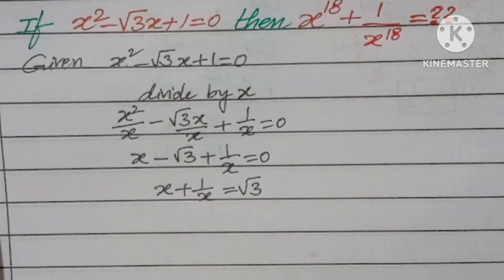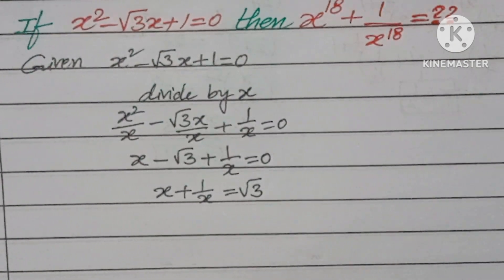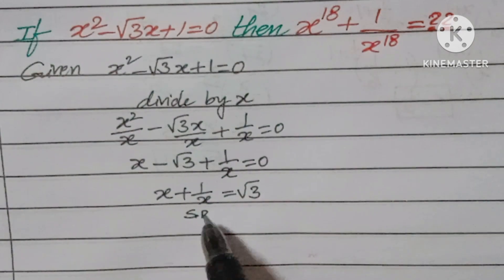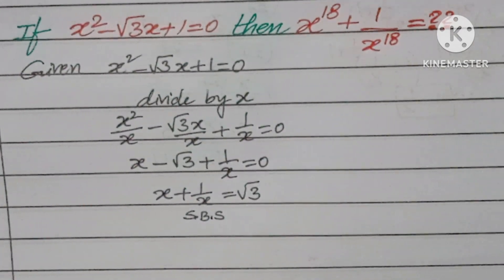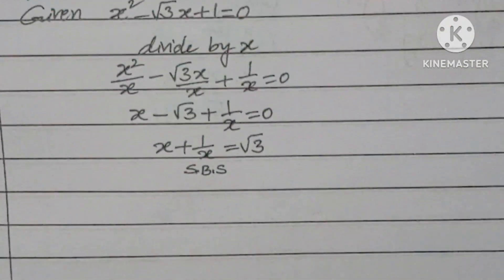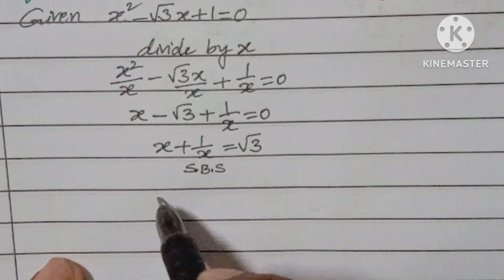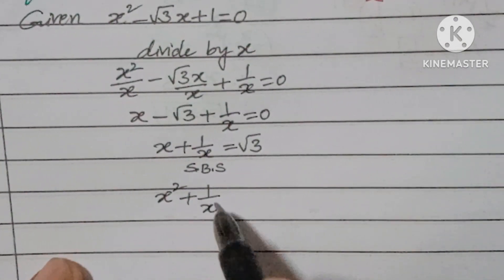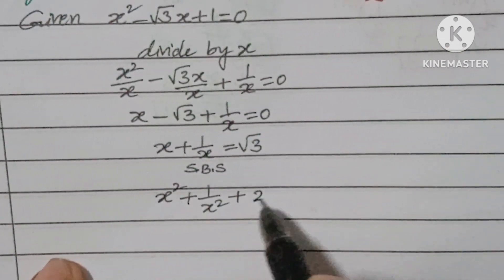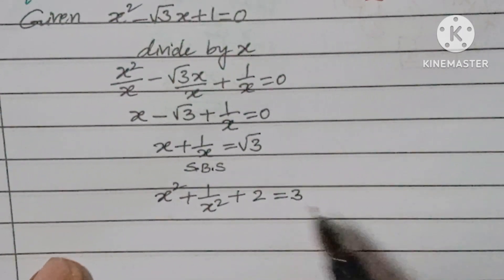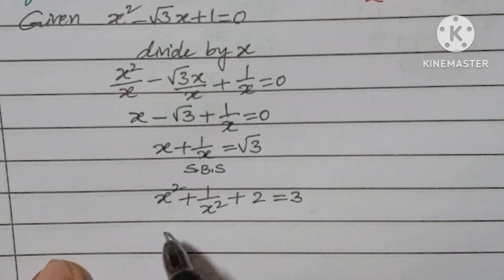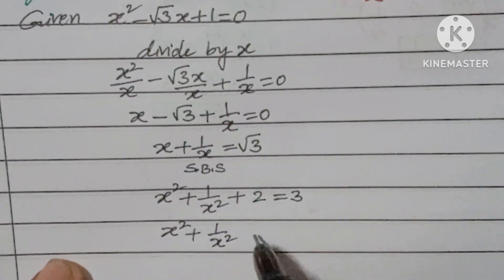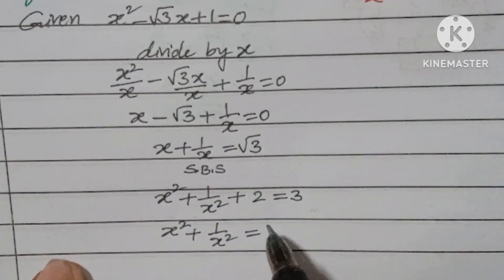Our target is x¹⁸ + 1/x¹⁸. First, square both sides of x + 1/x = √3. You get x² + 2 + 1/x² = 3, so x² + 1/x² = 1.